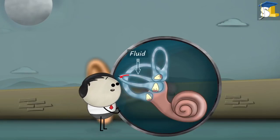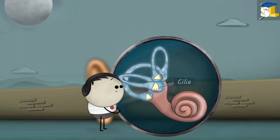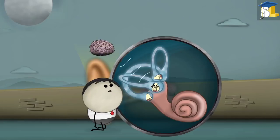Whenever we move our head, the fluid moves, resulting in the movement of the cilia as well. When the cilia moves, it sends signals to the brain informing which direction our head has just moved in.